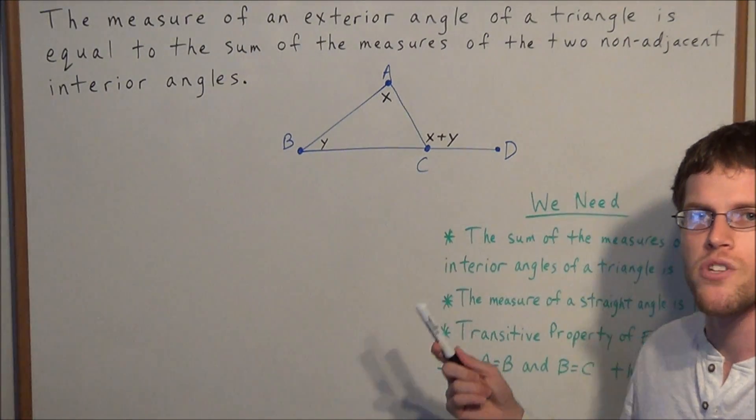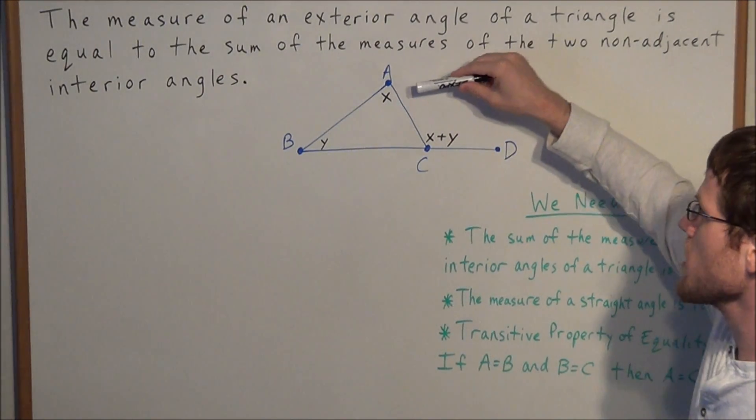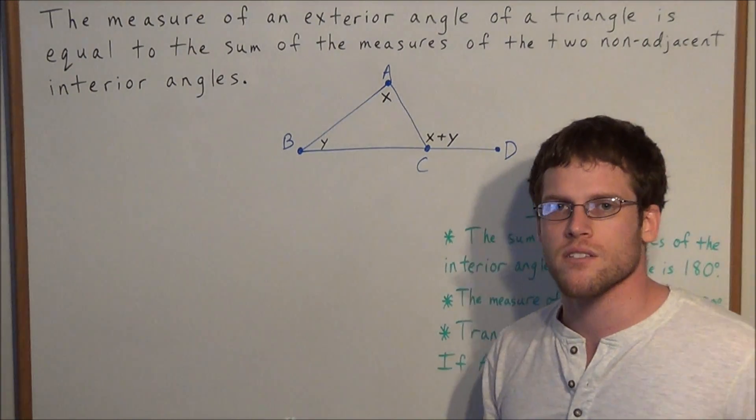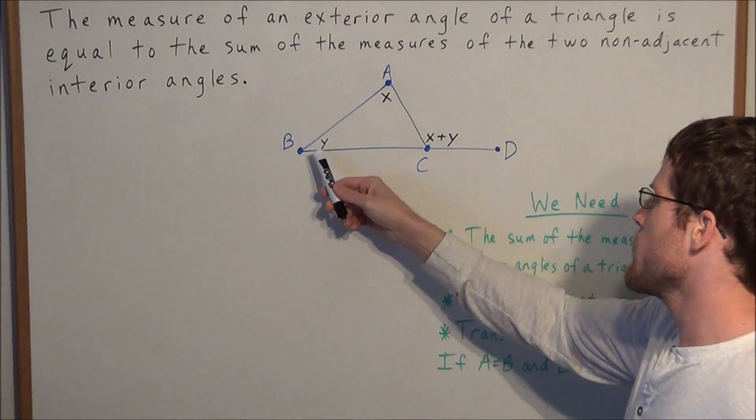Let's use this diagram to interpret the meaning of this theorem. We have some exterior angle, which in this case is modeled by angle ACD. The way we build an exterior angle is we extend one of the sides of the triangle via a straight line.